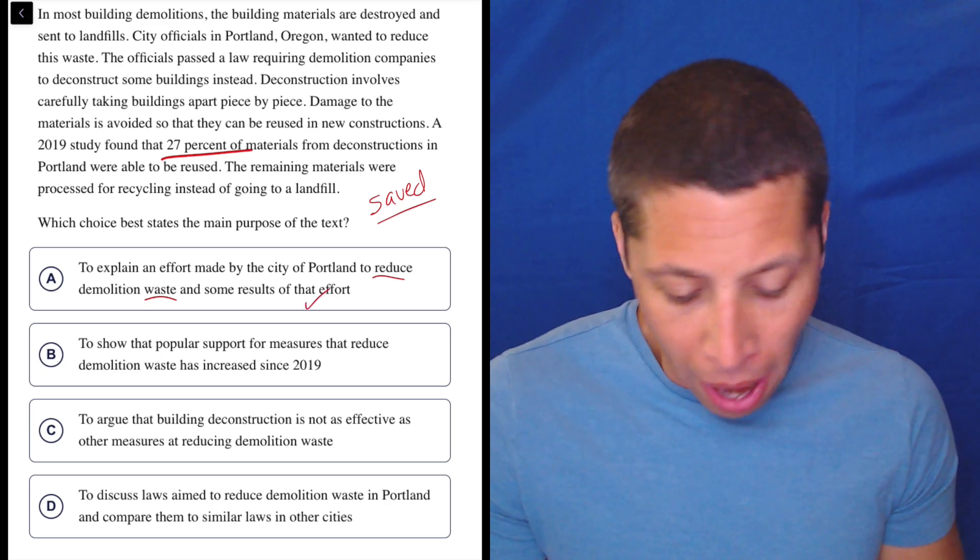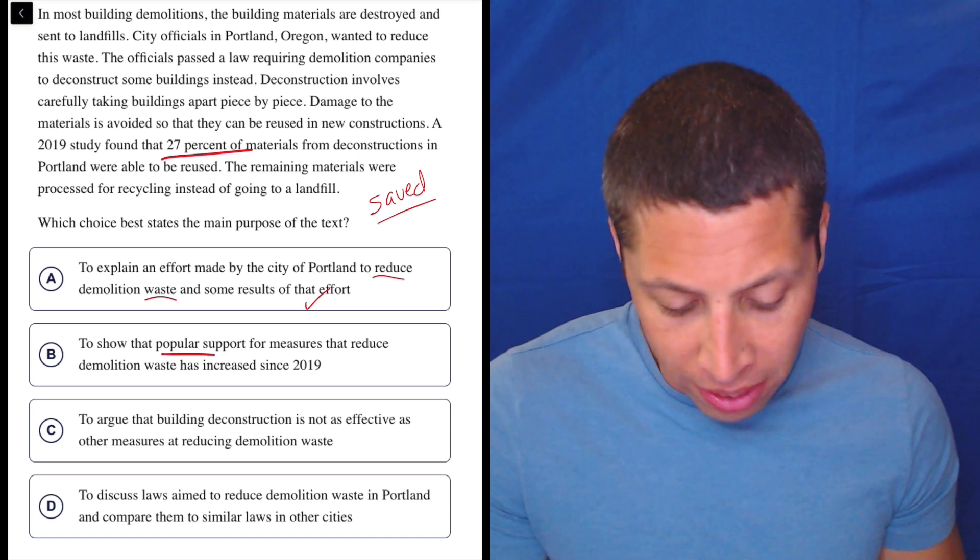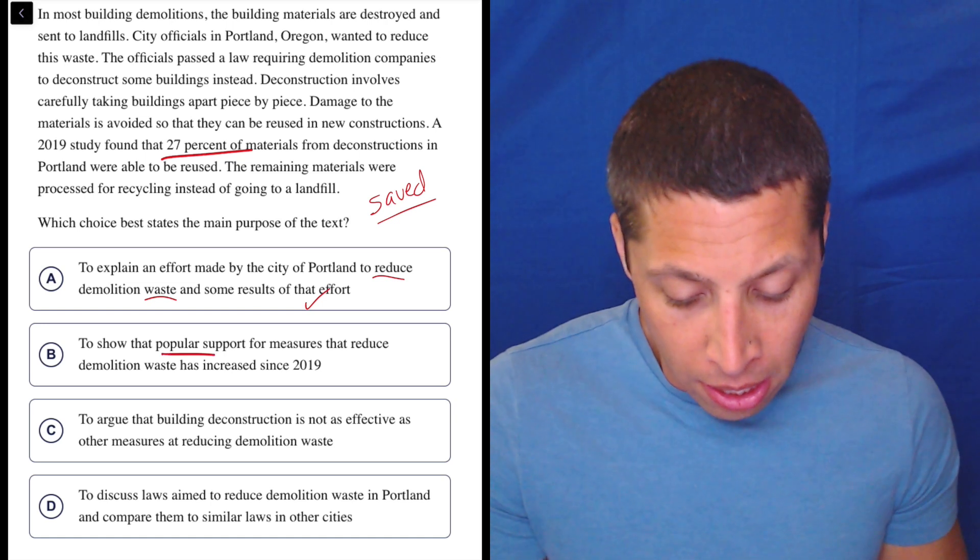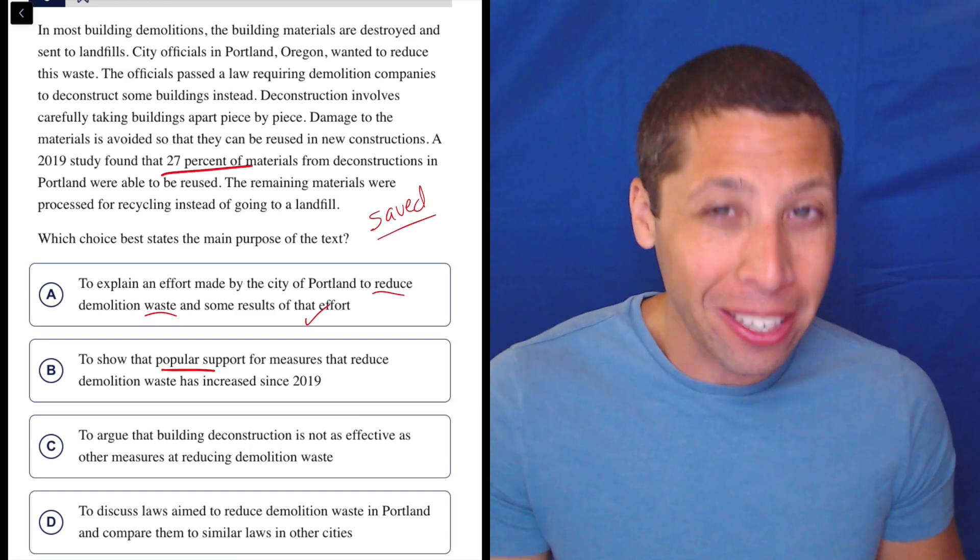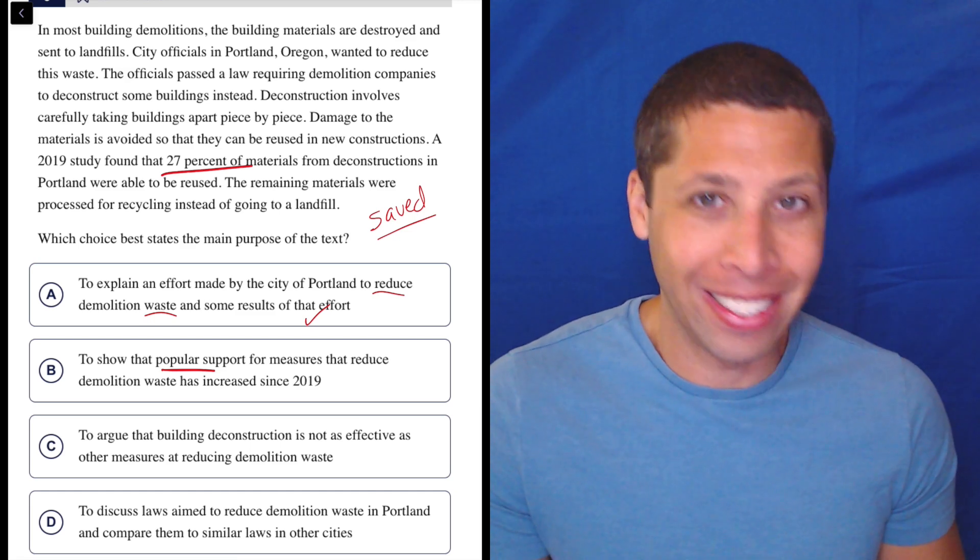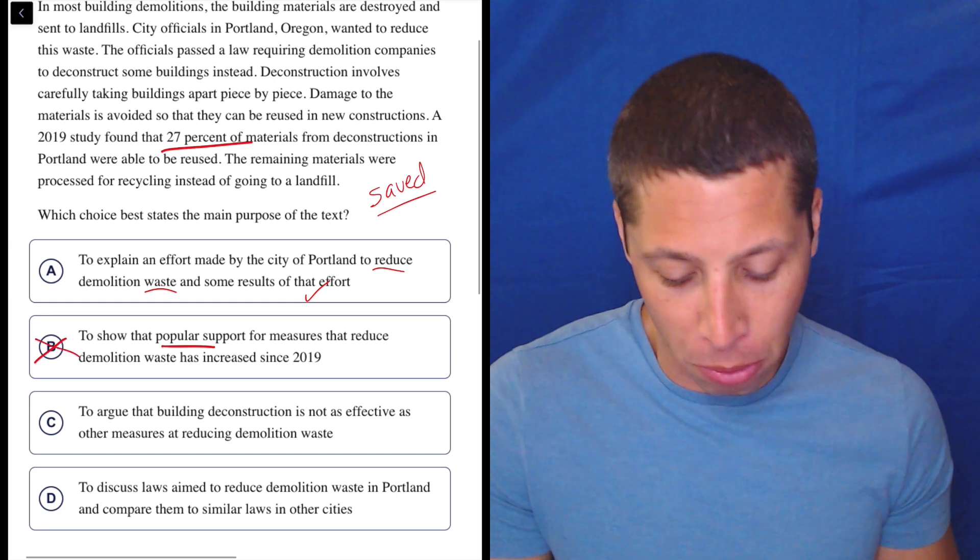Let's look at B. To show that popular support for measures that reduce demolition waste has increased since 2019. Well, no, that's not the survey. The survey is not about what people think of this. The survey is about the materials that were saved. So I don't know anything about the popular support.